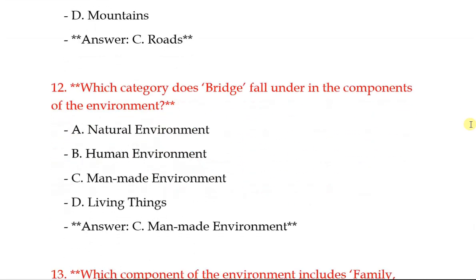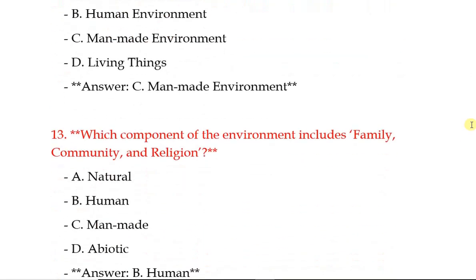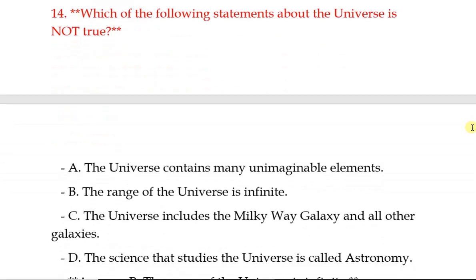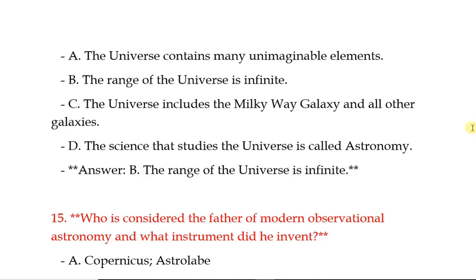Which category does a bridge fall under in the components of environment? Man-made environment. Which component of the environment includes family, community and religion? Correct answer: Human environment. Which of the following statements about the universe is not true? The range of the universe is infinite.